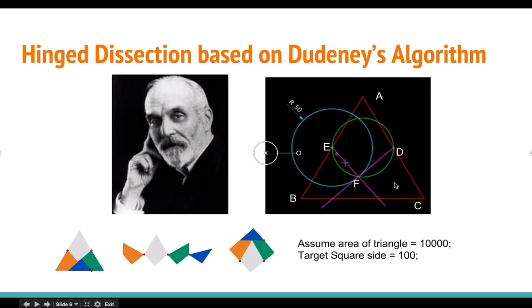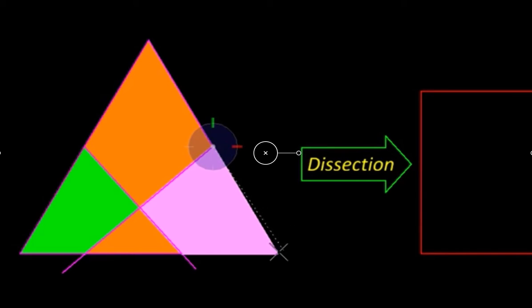And once we draw EF and DF, this is basically how you will cut it, which is shown on this chart.